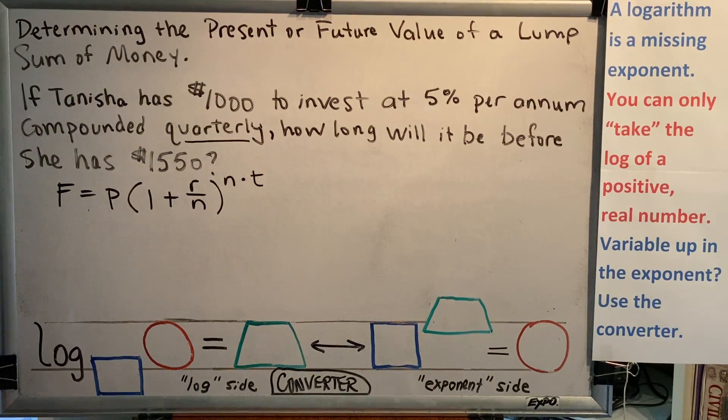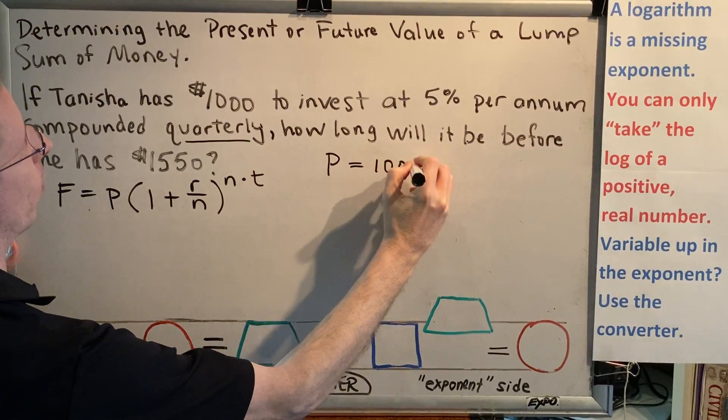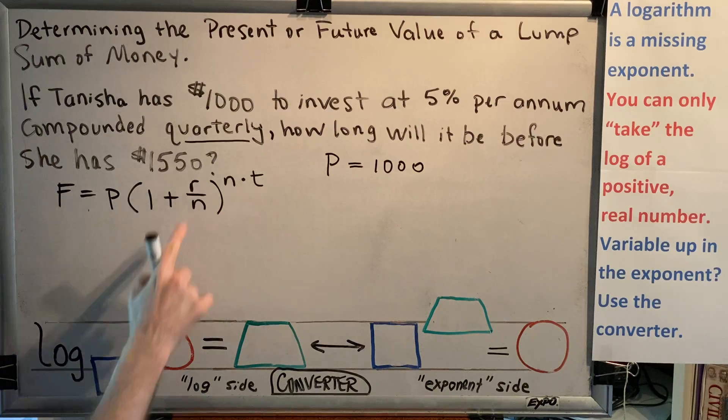Tanisha has $1,000 to invest. That's the amount of money she has now, in the present. That's the principle. At 5% per annum. That is the interest rate, R.